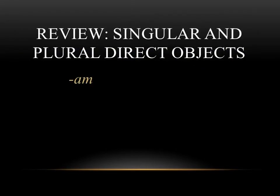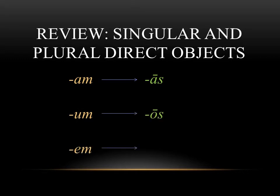To review: when you have a direct object that ends in -am, to make it plural we're going to switch it to -as. Likewise, -um will become -os, and -em will become -es. These endings are what you want to use whenever you have a plural.